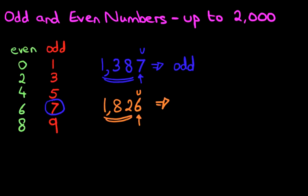Is 6 an odd number or an even number? Find it in the columns on the left. It is over here. 6 is an even number, and if 6 is an even number, then the whole number is even. 1,826 is an even number.